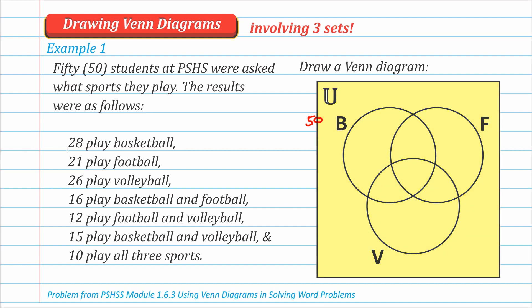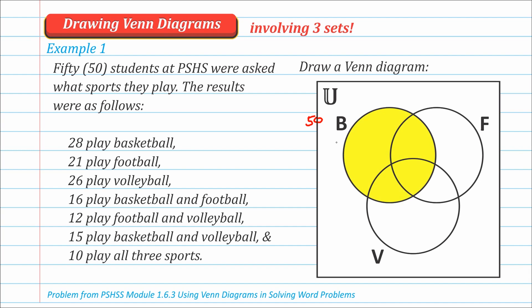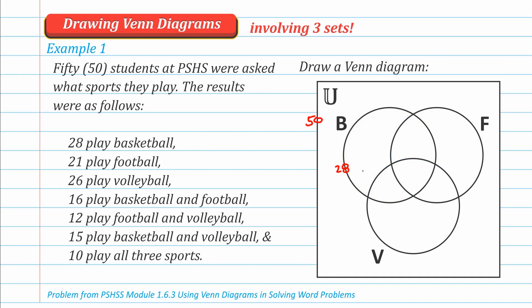Moving on, we know we have 28 basketball players. Where do we place 28? The whole circle B represents the total basketball players. Some might write 28 inside, but the problem is that might be confusing — we might think 28 applies only to that one region. The total of the entire circle is 28, so it's incorrect to write 28 there. Instead, write 28 at the edge of the circle as a reminder that the total of this circle should be 28, not just one region.